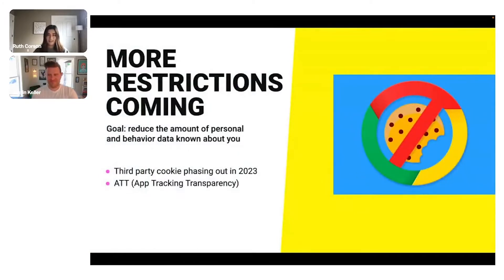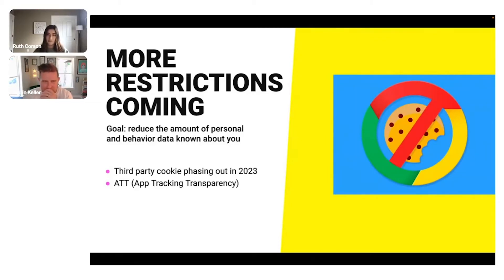Looking at oncoming restrictions — Chrome isn't the first browser to phase out the third-party cookie, but it was a huge announcement. In late 2019, Chrome made up more than 56% of the web browser market, and this phase-out is going to come in mid-2023.